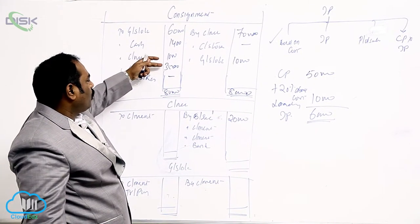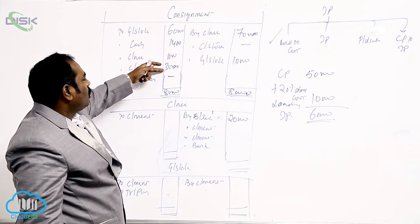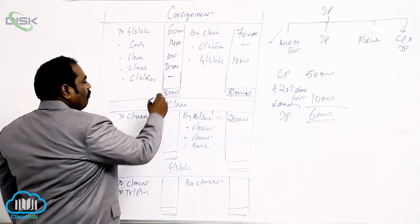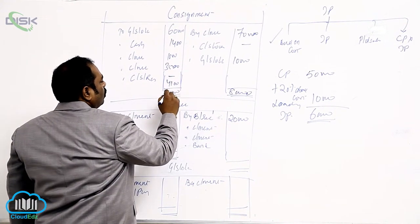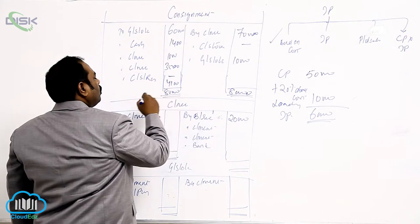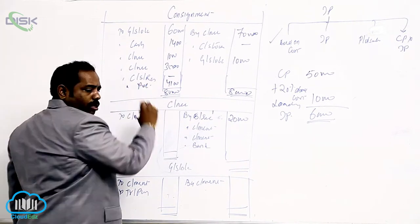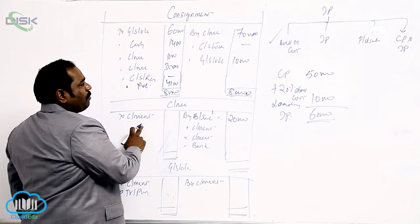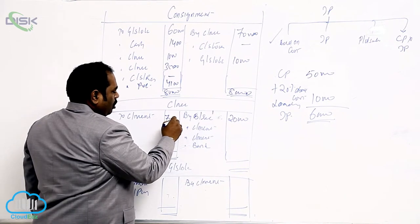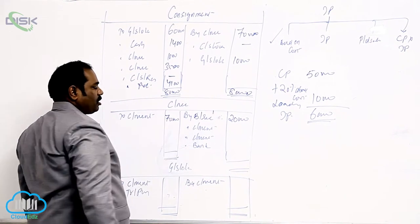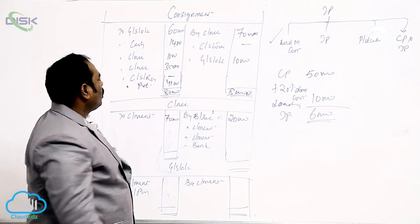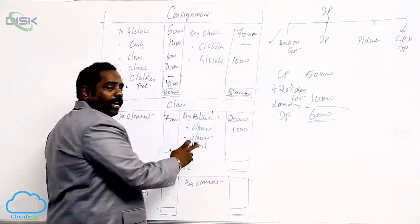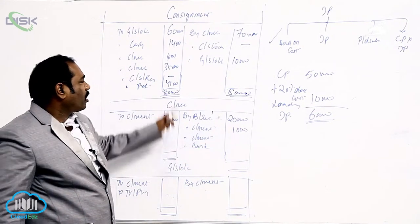Now find out the profit. The credit side totals 80,000. So 80,000 minus 65,900 gives 4,100 as profit. This is transferred to Profit and Loss. By consignment is for sales, by consignment is for expenses made by consignee, and by consignment is for commission.